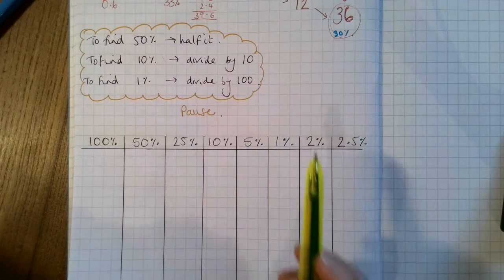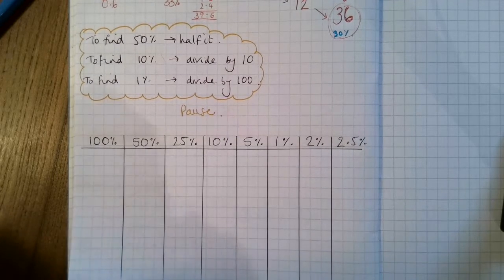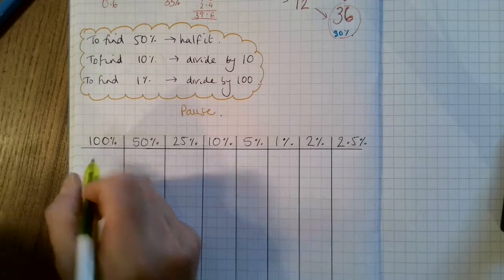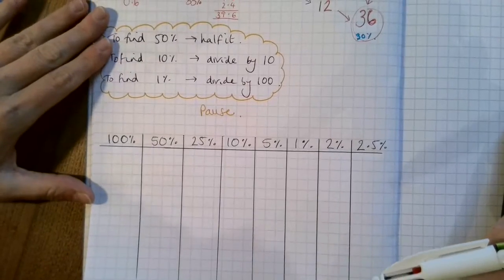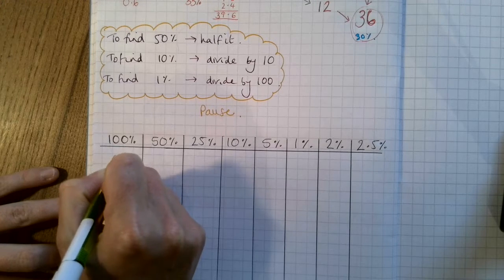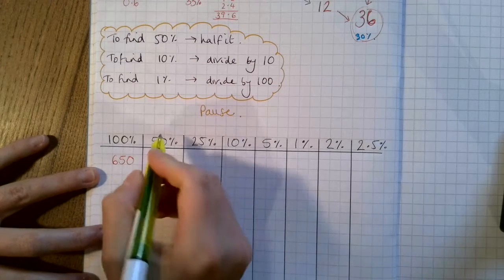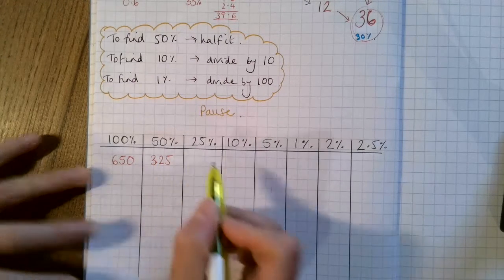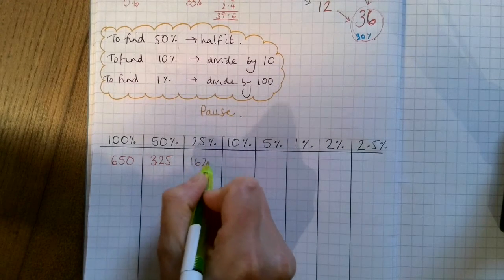So the next part of the video is just going to help you fill in the next part of the worksheet, which is the table. It's just if you've got a number in 100%, it's just like what we were doing before but in a different form. So if you've got 100%, let's say 650. To find 50%, you would half it. So that would be 325. And to find 25%, you would half it again. So that would be 162.5.